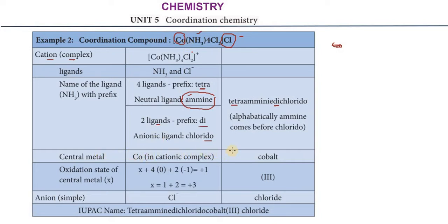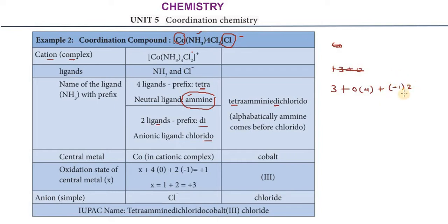Cobalt is in the cationic complex. To find its oxidation state: NH₃ is neutral, so 0 × 4 = 0. Chloride is minus 1, so minus 1 × 2 = minus 2. The overall complex cation charge is plus 1. So x + 0 + (minus 2) = plus 1, giving cobalt an oxidation state of plus 3.